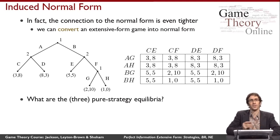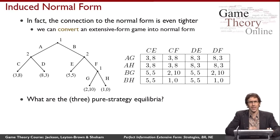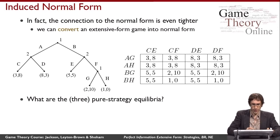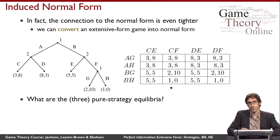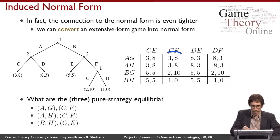Let's look at this game and reason about its three pure strategy equilibria. Rather than reading strategies off the game tree directly, it's more convenient for a small game to construct the induced normal form and reason about pure strategies there. The three pure strategy equilibria are: AGCF, AHCF, and BHCE.